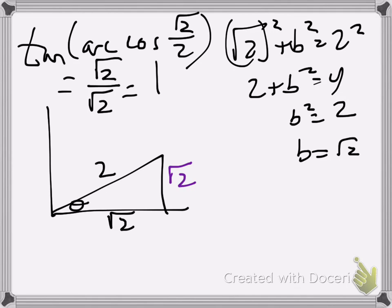By the way, this is a 45-45 triangle. So if I asked you what theta was, you would tell me that it's pi over 4 or 45 degrees. But I'm not asking that here. Just something you should be thinking about as you're working through these problems and watching this video, trying to make those connections.